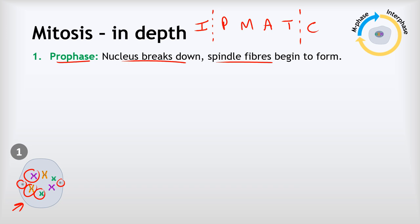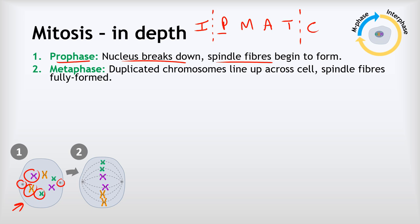The M in IPMATC stands for metaphase. During metaphase, the duplicated X-shaped chromosomes line up across the middle of the cell, and the spindle fibers are fully formed. The spindle fibers help coordinate the movement of chromosomes, ensuring they go to the right places at the right times.